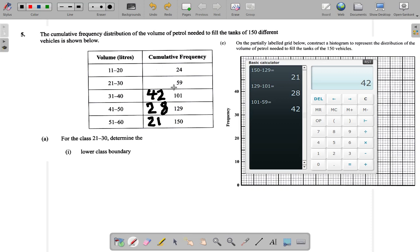59 minus 42. 59 plus 42 will give you the 101. 24 plus this gives 59. So to find out what that number is, I say 59 minus 24 gives 35.